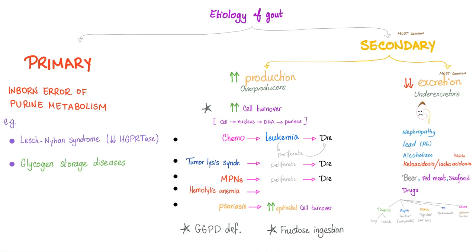Underexcretion causes include nephropathy, lead poisoning, and drugs such as diuretics (loop and thiazide), low-dose aspirin, high-dose niacin, pyrazinamide, and chemotherapeutic agents. Since tumor lysis syndrome can lead to hyperuricemia and gout, the drugs used to manage chronic gout are the same drugs that manage tumor lysis syndrome.